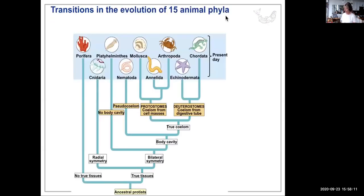This is a rough phylogenetic tree showing some of these phyla. It doesn't include all of them, but it shows transitions and evolution from common ancestors. For example, the very first Animalia were Porifera — the sponges.